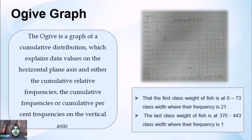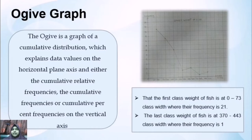The second graph is an ogive graph. The ogive is a graph of a cumulative distribution which shows data values on the horizontal axis and the cumulative frequency or cumulative percent frequency on the vertical axis. This ogive graph shows the weight of the fish. The X axis is class width and the Y axis is the level of cumulative frequency. From this graph, the first class width of fish is at 0 to 73 plus weight and the frequency is 21, while the last class width of fish is 370 to 443 plus weight and the frequency is 1.